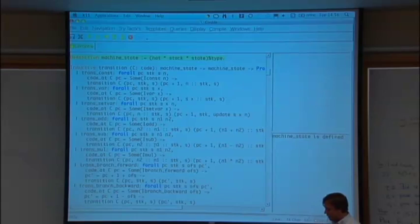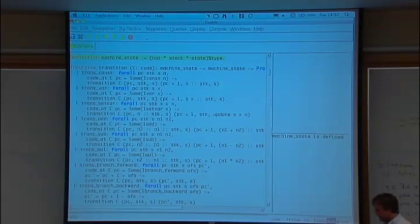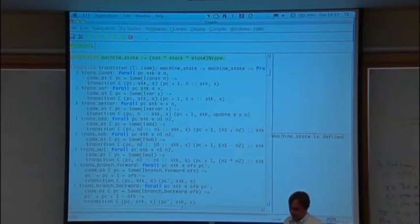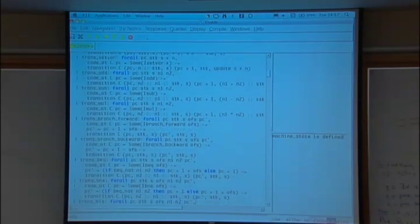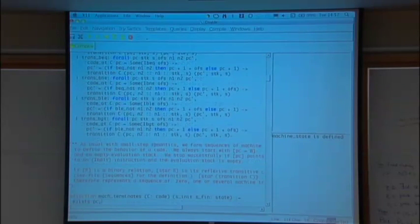One of my very first abstract machines, when I was doing camel light, got it wrong for floating point subtraction. And it took like two months for anyone to notice. All right. And then we have the branches here with some arithmetic on the PC. So you can read that if you want.